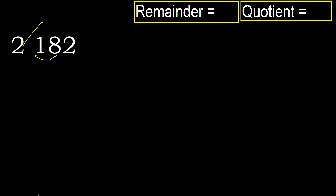2 multiplied by which number is nearest to 18 but not greater? 2 multiplied by 9 is 18. 18 is not greater. 18 minus 18 equals 0.